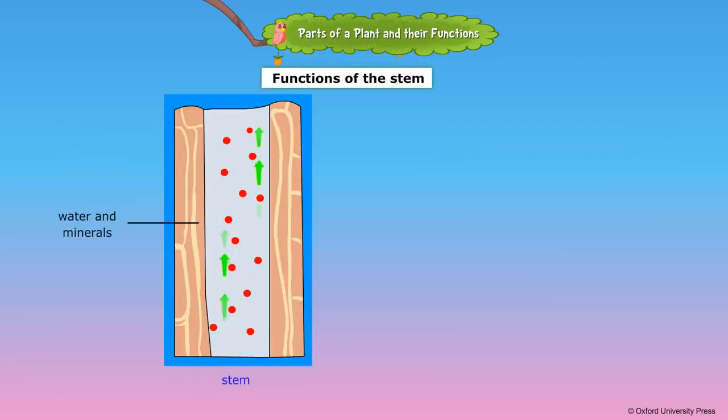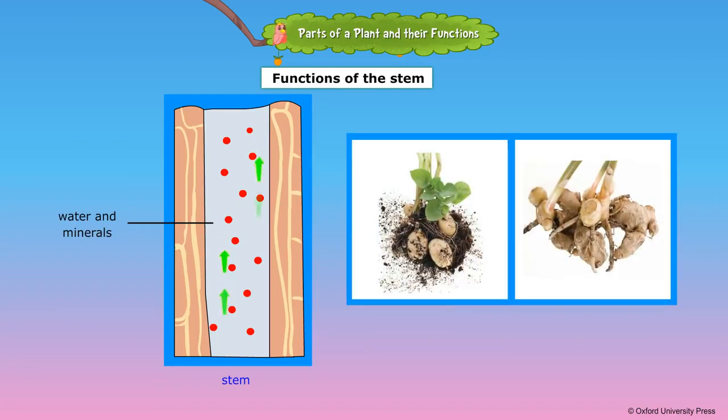The stem carries water and mineral salts from the roots to the rest of the plant. At the same time, it carries food made by the leaves to the rest of the plant. Sometimes extra food is stored in the stem. Potato and ginger are examples of plants that store food in the stem.